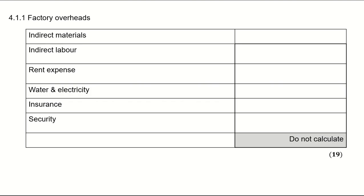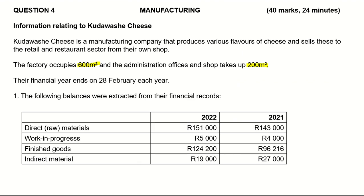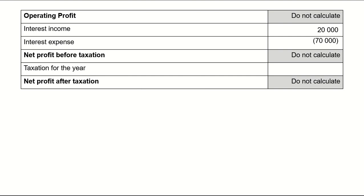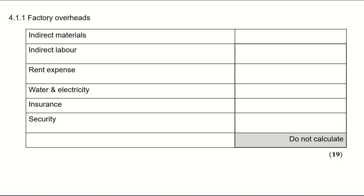The next section deals with indirect material. For indirect material we start with the balances. The opening balance for last year was 27,000 and the closing balance for this year is 19,000. When you put it in the indirect material cost note, start with the opening balance, add purchases, and minus any returns.